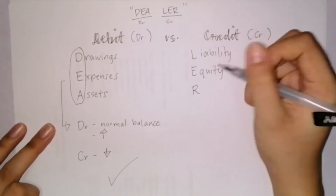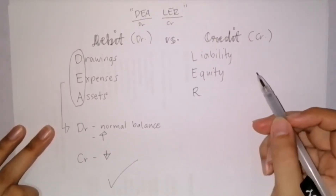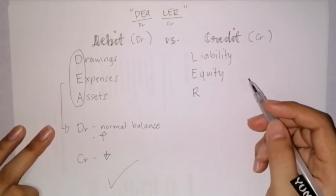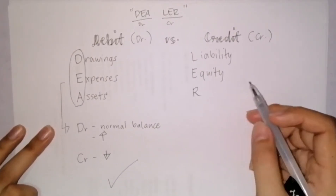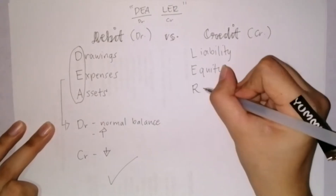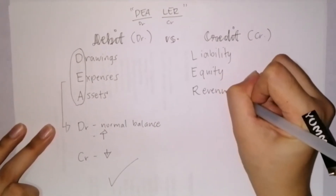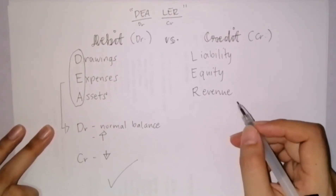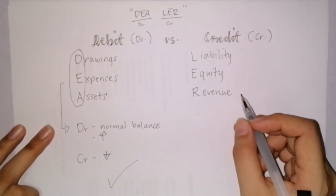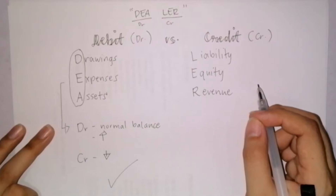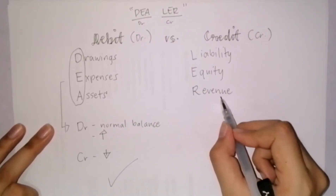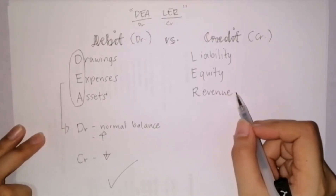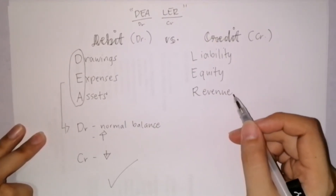Next is E for equity. Equity represents the residual interest of the assets of the entity after deducting all its liabilities. Next is revenue or income. Revenue is defined as increase in assets or decrease in liabilities that results in an increase in equity, other than those relating to contributions from the owners. Revenue is what you earn from the normal operations of the business.